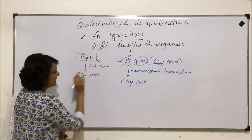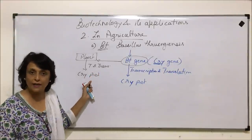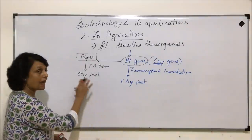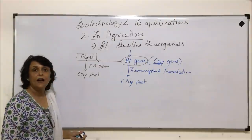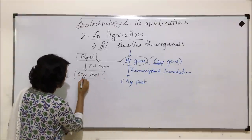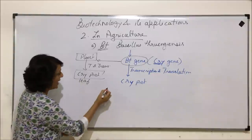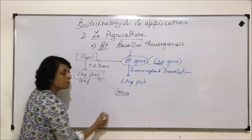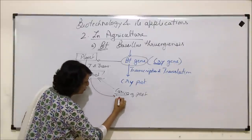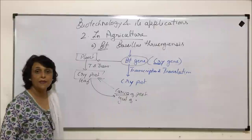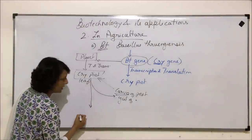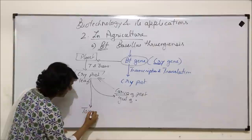The same crystalline protein is synthesized and accumulates in the plant. In the plant also, there is no alkaline pH, so this protein remains in its crystalline form everywhere in the plant. When a caterpillar — that is the larval stage of the pest — feeds on this plant, this protein gets into the gut of the pest. In the gut of the pest, the pH is alkaline, and so this protein turns toxic.